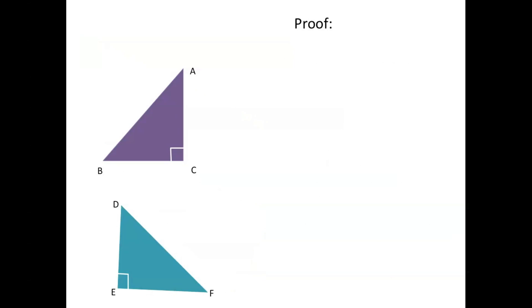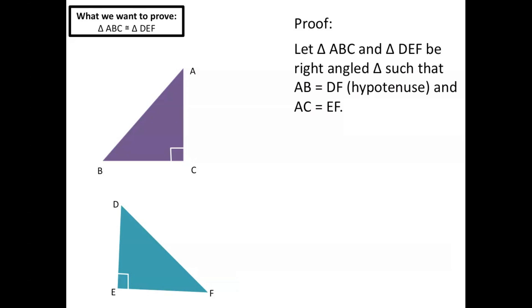So how do we prove this? Well, let's have these two triangles ABC and DEF and we want to prove that triangle ABC is congruent to triangle DEF. Let's assume that we already know that side AB is equal to DF which are the hypotenuses of both right angle triangles, and also side AC is equal to EF.